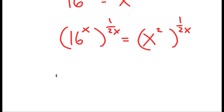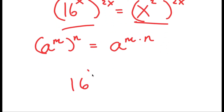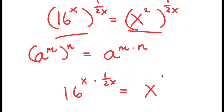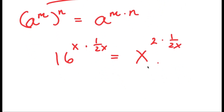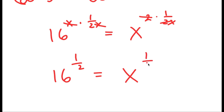If I have something in the form a to the power of m to the power of n, this equals a to the power of m times n. Applying this to both terms: 16 to the power of x times 1 over 2x simplifies — the x's cancel — leaving 16 to the power of 1 half on the left. On the right, the 2's cancel, leaving x to the power of 1 over x.